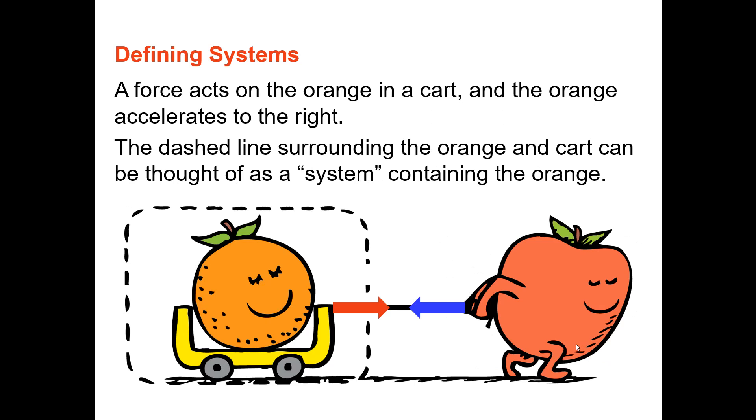Well, let's look at apples and oranges. Let's say that we have an apple that is pulling an orange in a cart. And we are going to look at the orange as our system. So let's say the orange is sitting still at first, and then the apple starts to tug on a rope that's tied to the cart. And so the orange in the cart start to move.